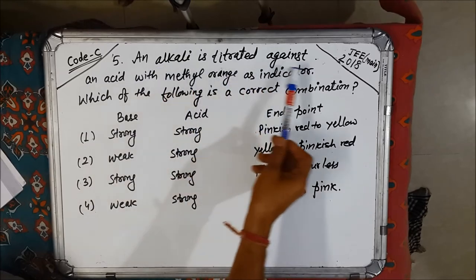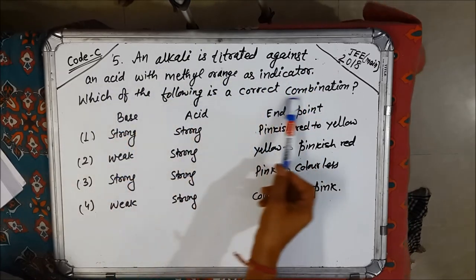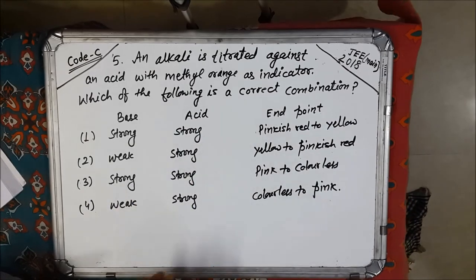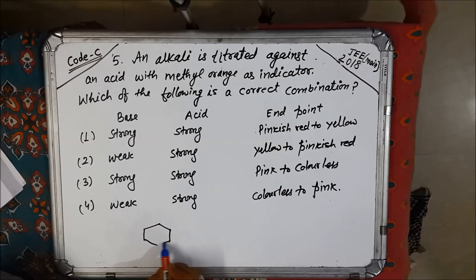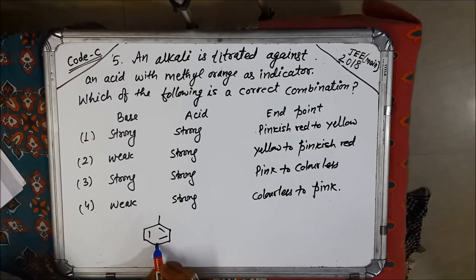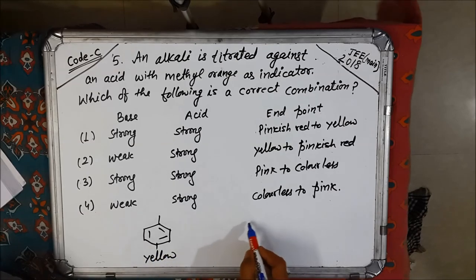Fifth question: An alkali is titrated against an acid with methyl orange as indicator. Which of the following is the correct combination? Now you know methyl orange has two forms.